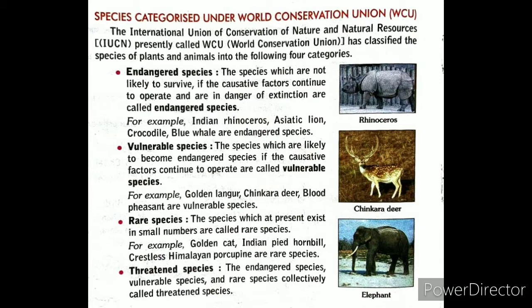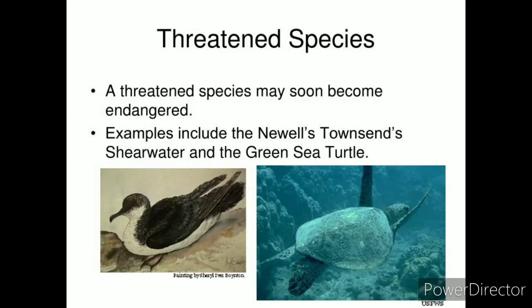The last category is Threatened species. The Endangered species, Vulnerable species, and Rare species collectively are called Threatened species. Threatened species mein humne jo upar tino categories padhi hain — Endangered, Vulnerable, and Rare species — ye tino categories is threatened species mein included hoti hain.